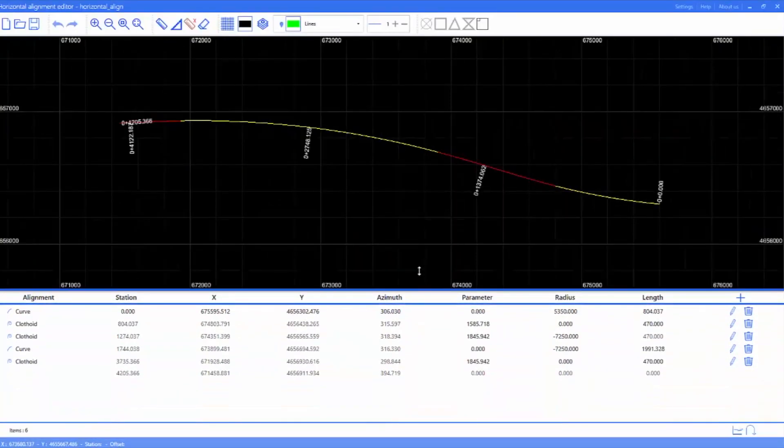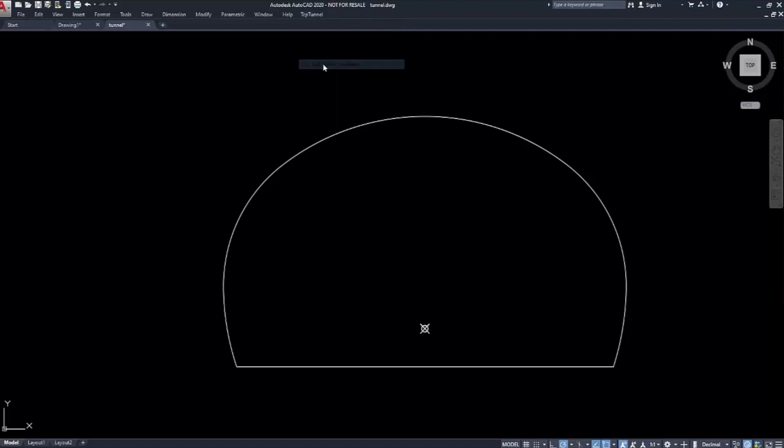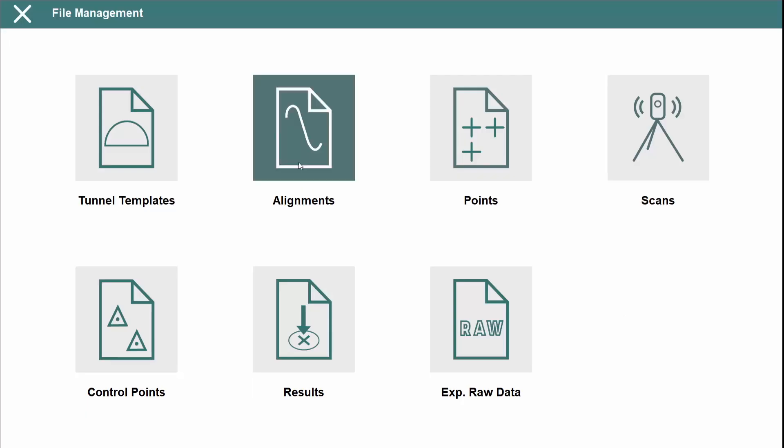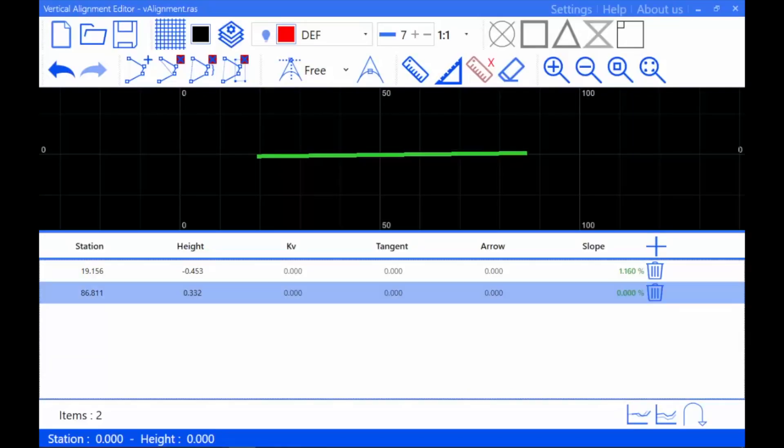Each project is defined by the horizontal and vertical alignments, the tunnel design, and cloud points. Data can be extracted from CAD drawings or imported from Land XML, IFC, and other formats.